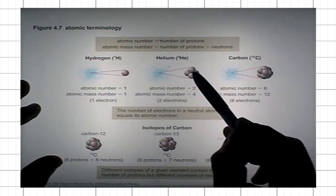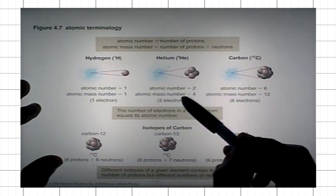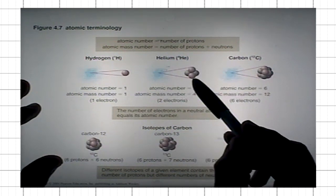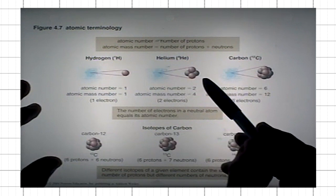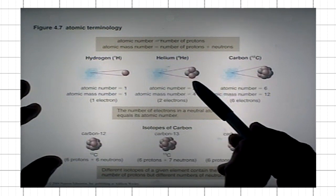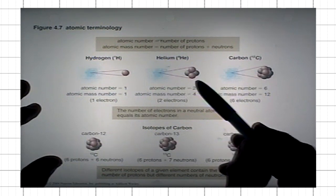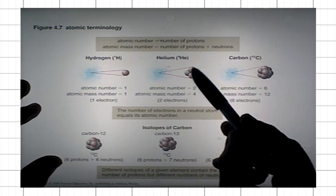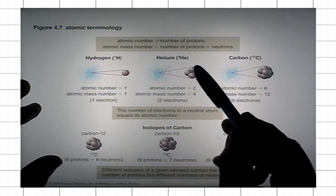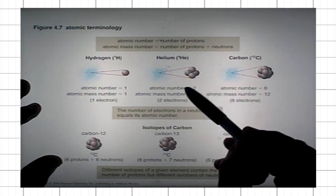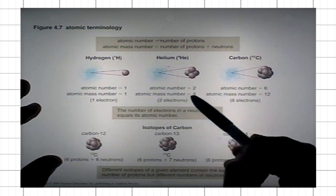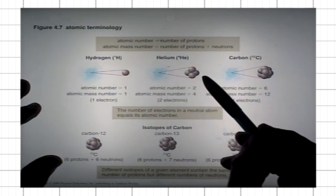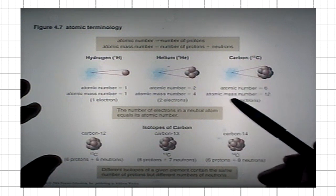Atomic number refers to the number of protons in the nucleus. It turns out that neutrons have mass roughly equal to that of a proton. With two protons and two neutrons — two nucleons each — the atomic mass number is four, four times that of a proton.